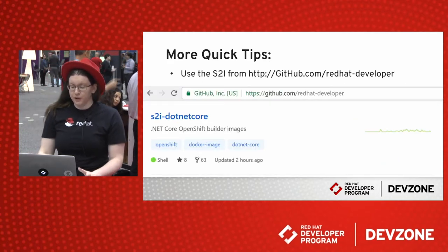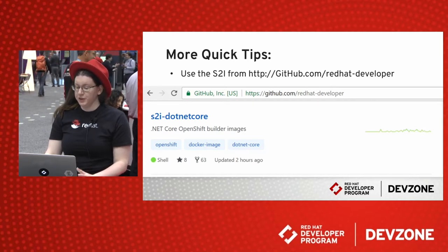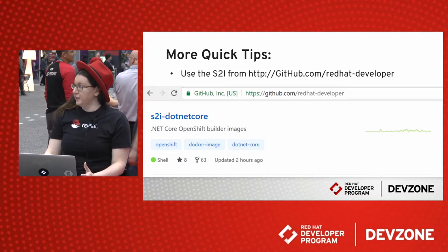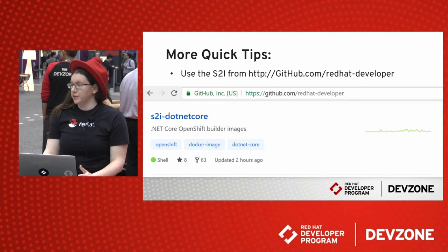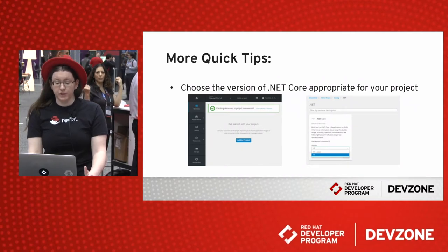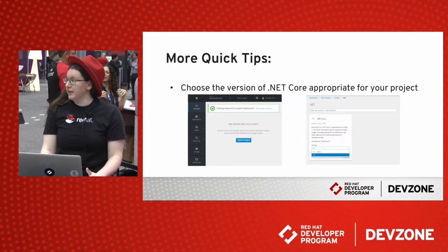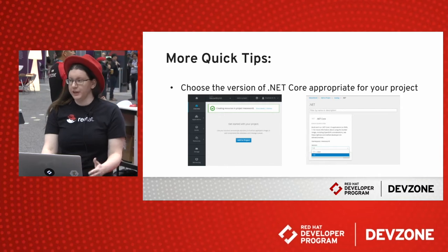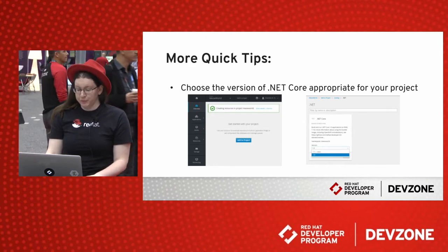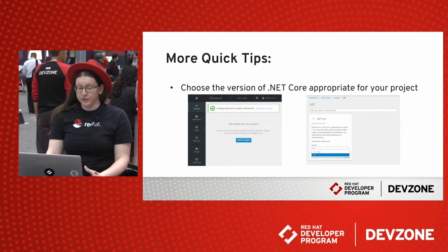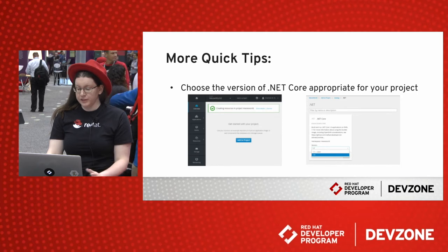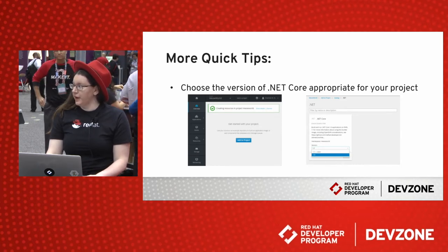Now you should be ready to create your project on OpenShift. You'll be telling it which S2I you want to use — again, I recommend checking for a release from the Red Hat Developer GitHub account or something officially recommended or that others have had success with. If everything has gone correctly, navigate to Add to Project in the OpenShift web console. You should see .NET as an option in the Languages menu. Choose .NET Core 1.0 for 2015 projects or 1.1 for 2017, and make sure you're using the correct version or your app will not build.